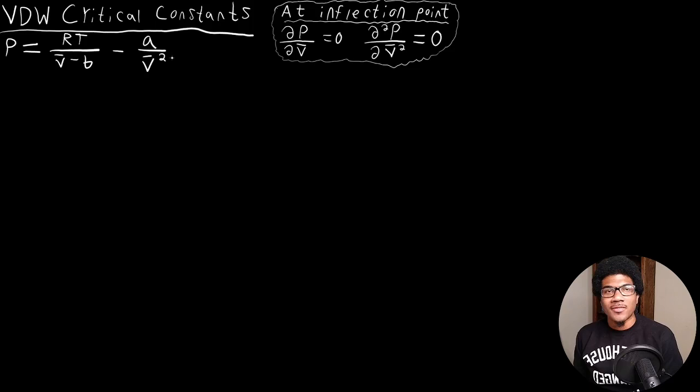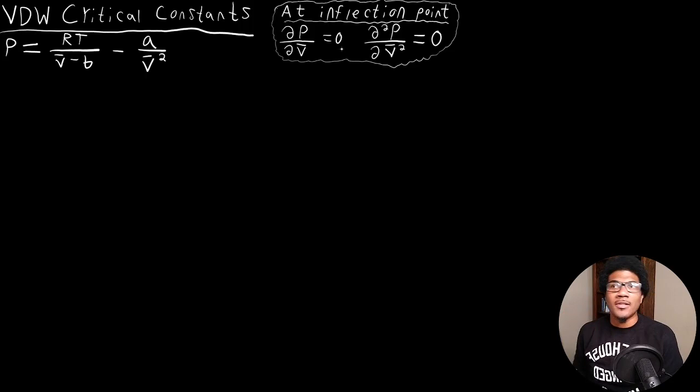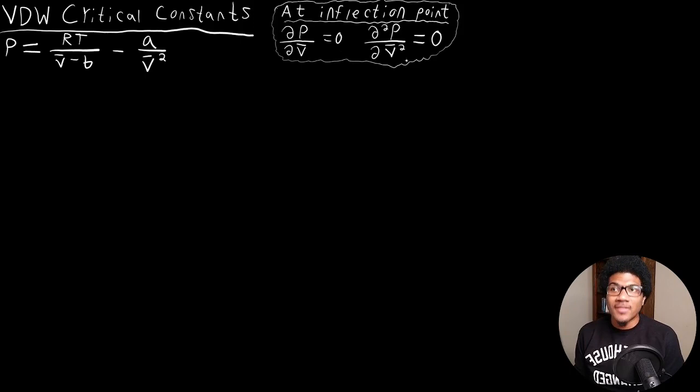In this video, we're going to look at the critical constants within the Van der Waals equation of state. Last time we looked at the critical constants and defined what they are — they define the point at which a gas can be liquefied. We noted that the critical isotherm would have an inflection point where it's changing from gas to liquid behavior, and that we can exploit that inflection point. We know that at particular points the first derivative and the second derivative are both going to be equal to zero.